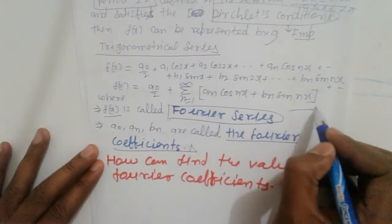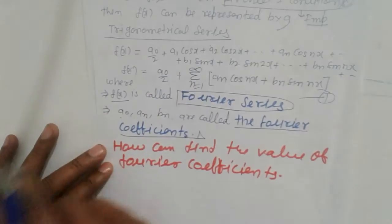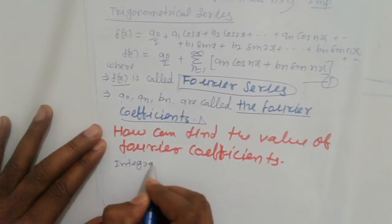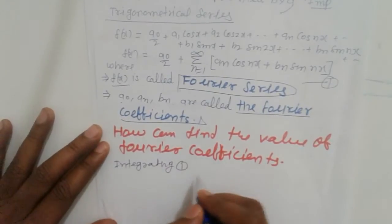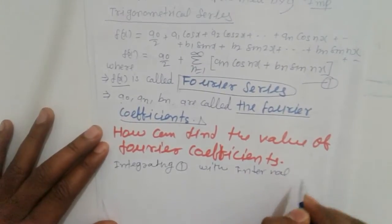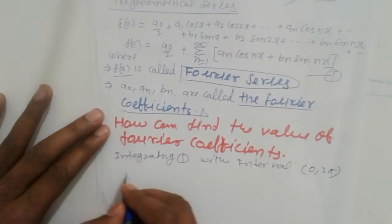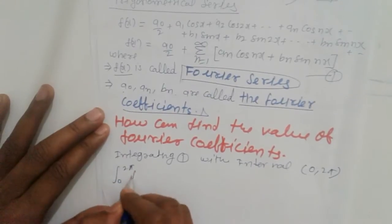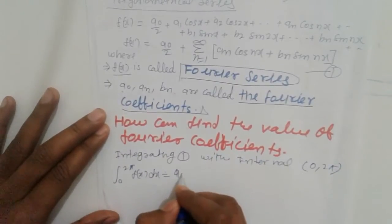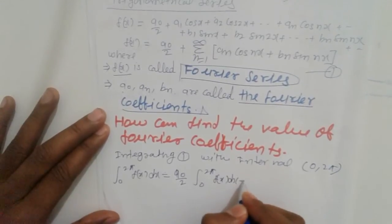Take equation number 1. Integrating equation 1 with limit 0 to 2pi. So, integrating with interval 0 to 2pi: the integral from 0 to 2pi of f(x) dx equals a0/2 times the integral from 0 to 2pi of dx plus the integral term for an from 0 to 2pi of cos(nx) dx.